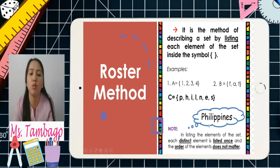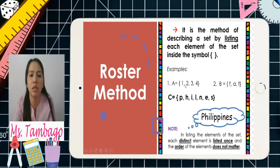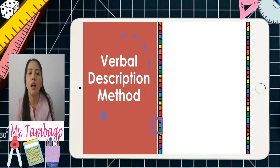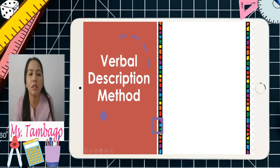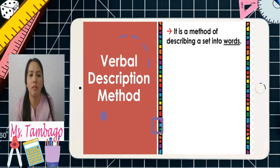Those are examples of the roster method, which is the most commonly used method for writing a given set. Next, we have the verbal description method. From the word itself, 'verbal description' means we are going to write the given set using words.